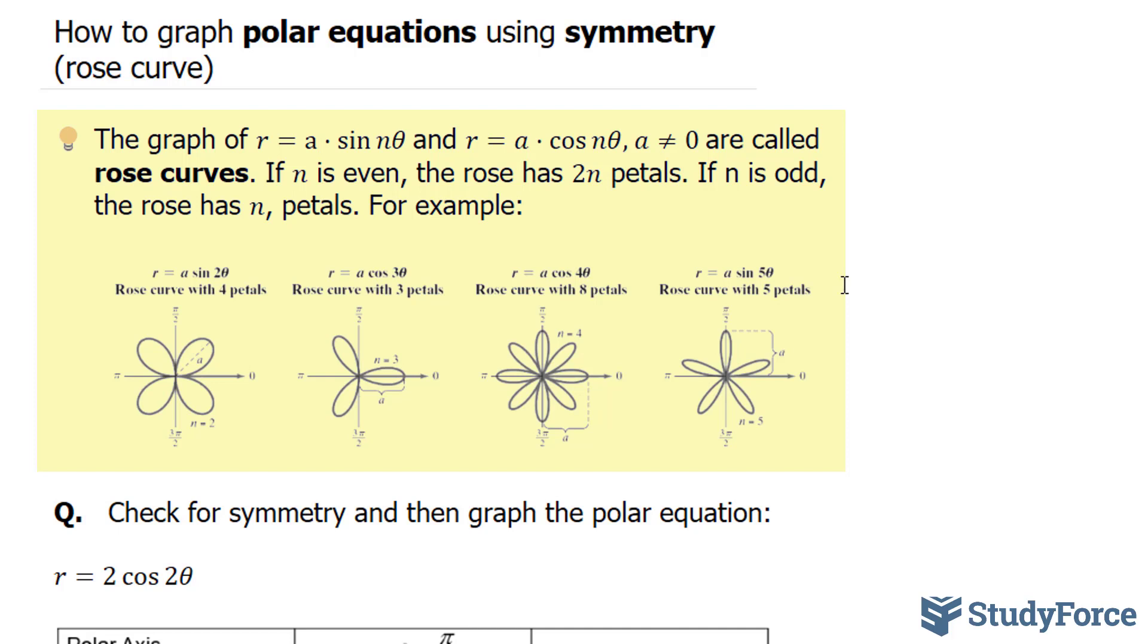If n is even, the rose has 2 times n petals. If it's odd, the rose has n petals.